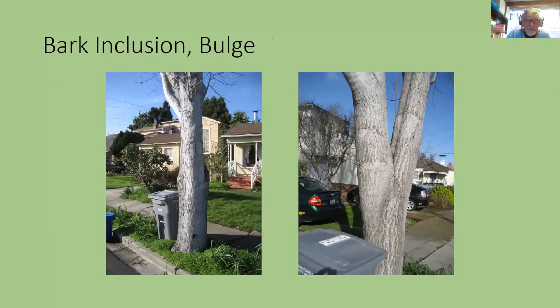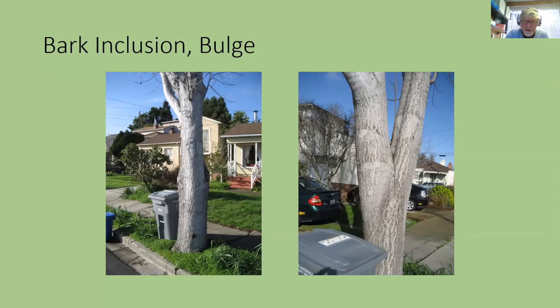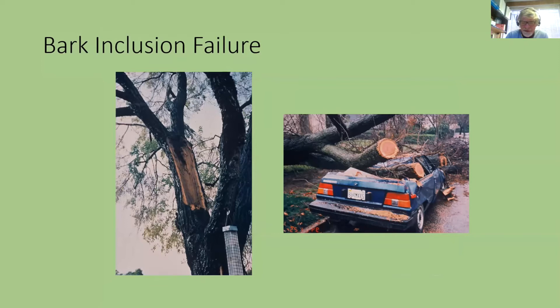Bark inclusion is when there's a narrow angle attachment between two trunks and bark is squeezed in between them — they're not connecting all the way through. Viewed from 90 degrees you'll see bulges where the tree is reacting to the inclusion, trying to repair it by producing extra wood — not always successfully. Here's a typical bark inclusion failure: the black material is bark inclusion; it gets hit by wind, cracks, and the whole thing comes down, typically tearing a long strip down the trunk. Poor taper — when a tree is pruned removing all inside growth so energy concentrates at the end — creates a weaker branch with heavy end weight.